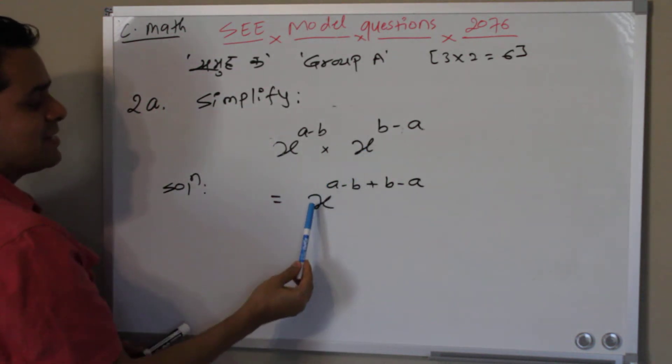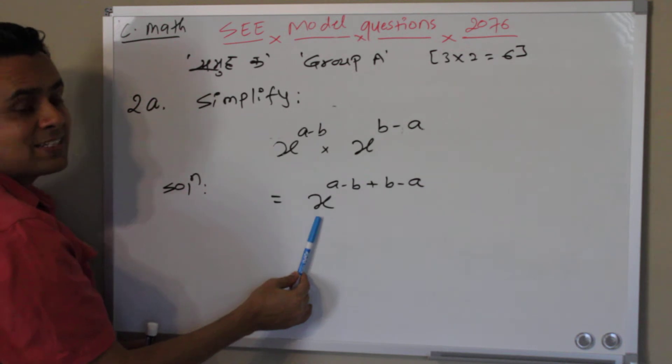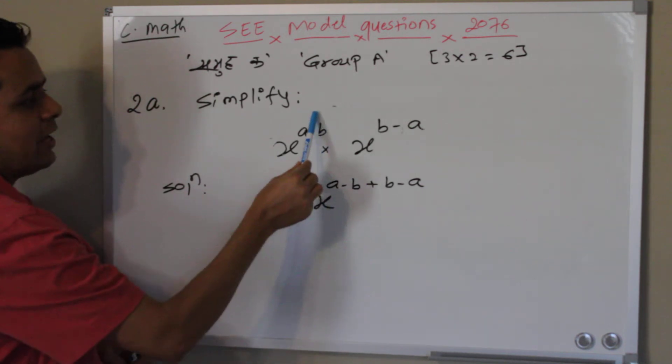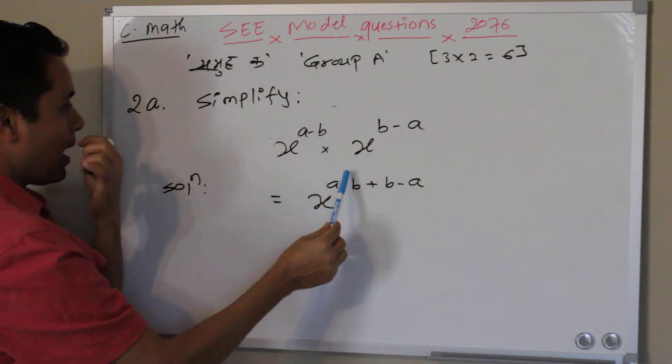So from these two bases, I took one x, one base, then added the power. Nothing more than adding the power.